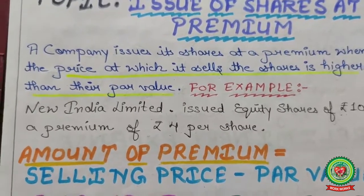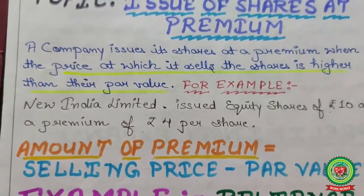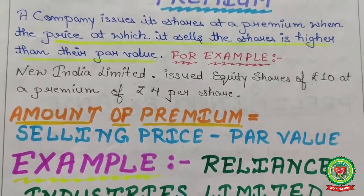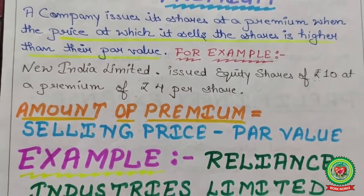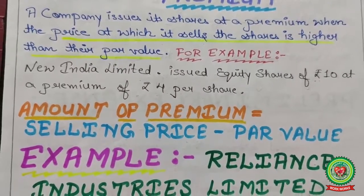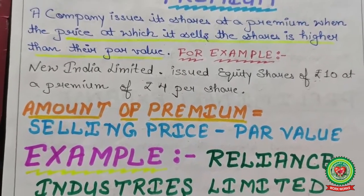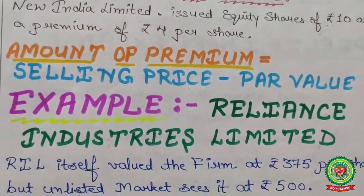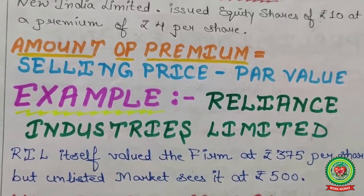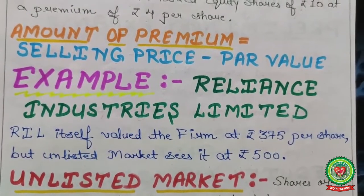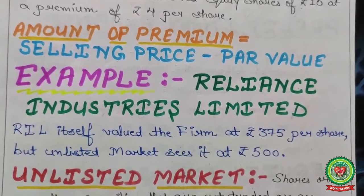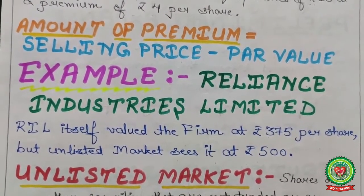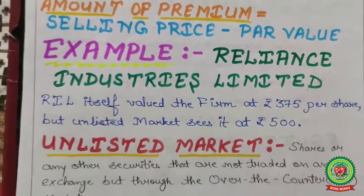What is premium? A company issues its shares at a price when the price at which it sells the share is higher than the face value. For example, New India Limited issued equity shares of rupees 10 at a premium of rupees 4 per share — that means 4 rupees extra charged because of goodwill or some other reason. Amount of premium equals selling price minus face value. Reliance Limited valued the firm at rupees 375 per share, but the unlisted market sees it as rupees 500, and the difference of rupees 125 is considered as premium.